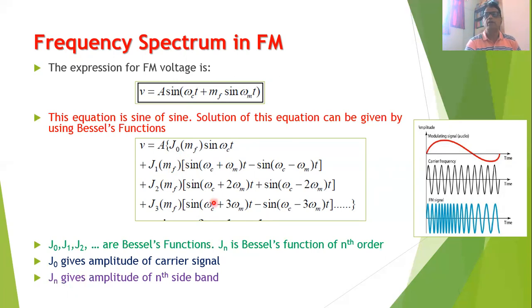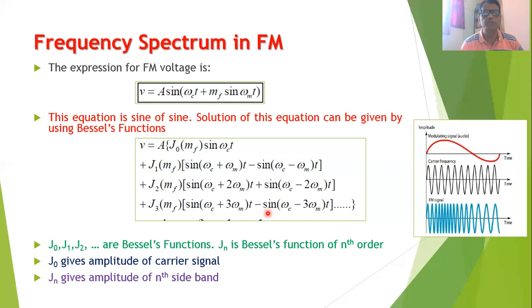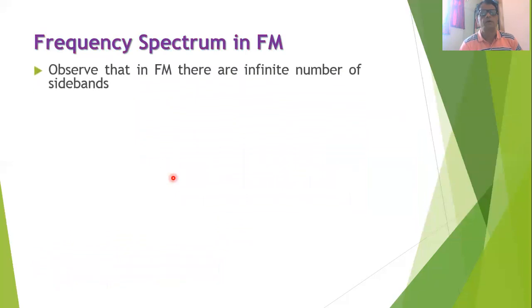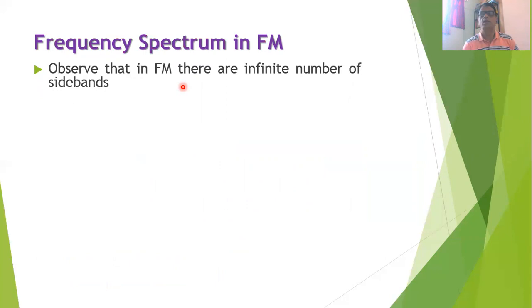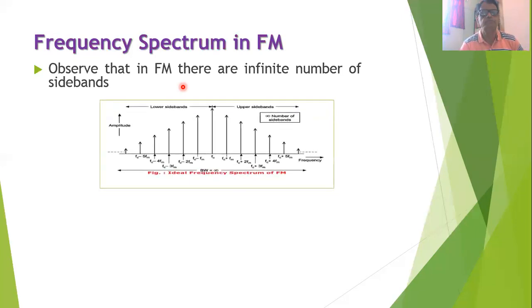Since this expression has infinitely many terms, there are theoretically infinite sidebands in FM, with the amplitude of each sideband depending on the Bessel function. In contrast, in AM there are only two sidebands — upper and lower — but in FM there are theoretically infinite sidebands.